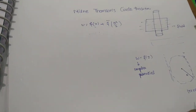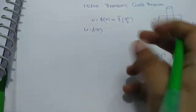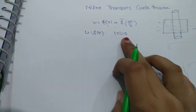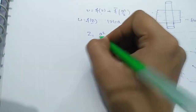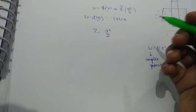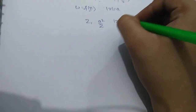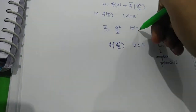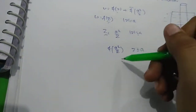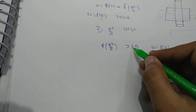What is given? W = F(z), which is our complex potential. The singularities are outside this circle. Now, z and a²/z are inverse points with respect to the circle. If there are no singularities inside the circle mod z = a, then f(a²/z) will have its singularities outside the circle, since these are inverse points.